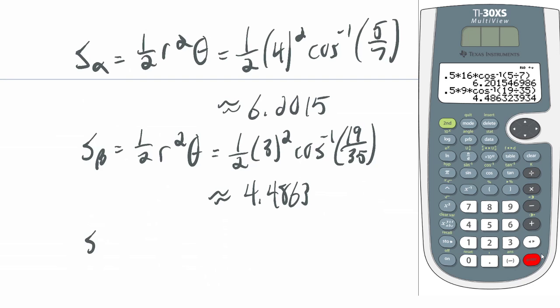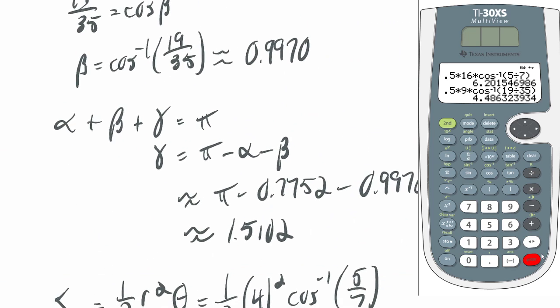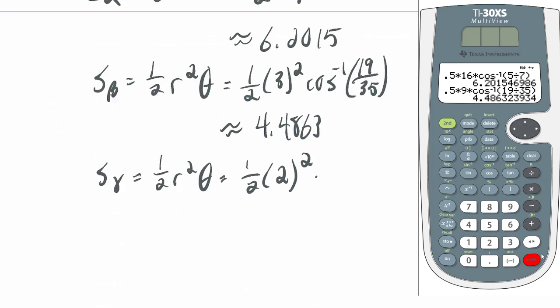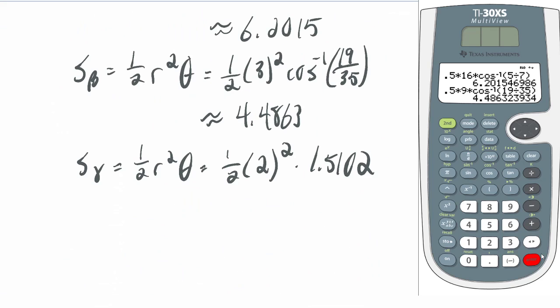And then sector gamma, this will be the radius 2. So 1/2 r squared theta, which is in this case 1/2 times 2 squared. And in this case, since I don't want to rewrite that entire expression, I'll just use 1.5102. In the calculator, though, I'm going to go back up here. I'm going to take this so the calculator keeps it, multiply that by 0.5 and that by 4. So I'm a bit out of order, but that's okay. And then I get 3.0203.